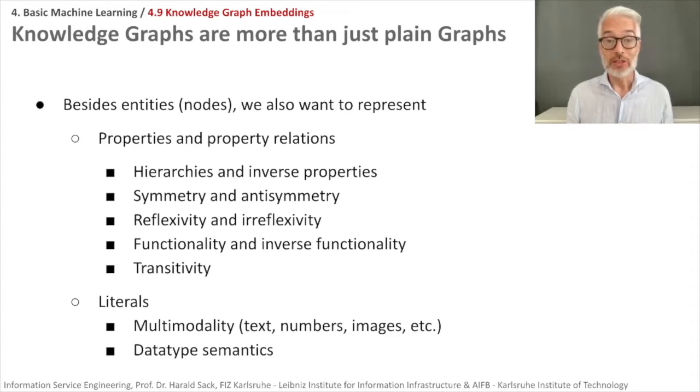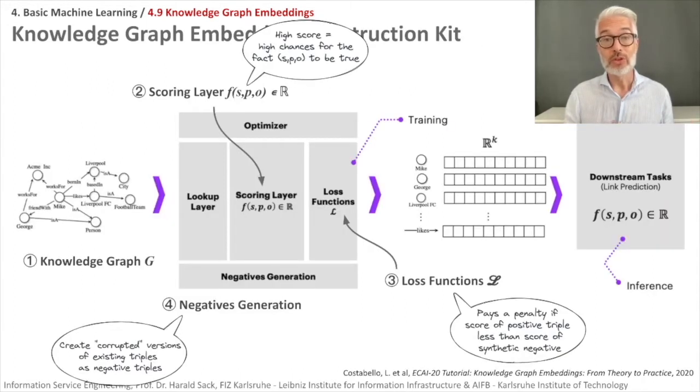How do knowledge graph embeddings usually work? Here's the basic workflow for how you compute them. You start with a typical knowledge graph. You need something like a lookup layer where you are able to access each single node and its neighborhood. Then in the scoring layer of your system, you try to score every triple that you find. A triple gets a high score if there are high chances for the triple to be true.